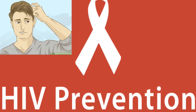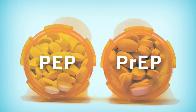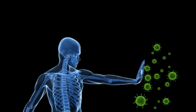Is there any medicine to prevent HIV/AIDS? Yes. Drugs called PrEP and PEP can prevent HIV in the body if a person feels they have been recently exposed to HIV. However, this drug must be taken within 72 hours of exposure and only in emergency conditions.